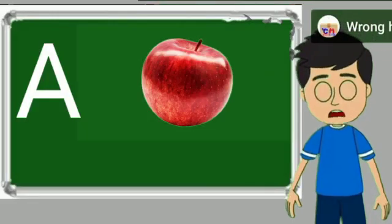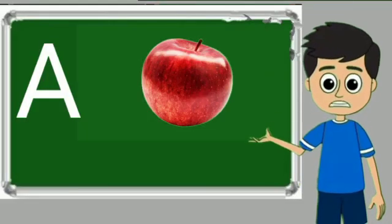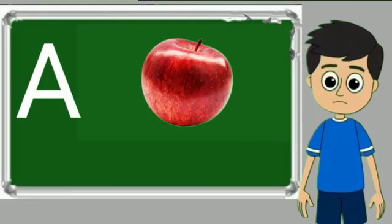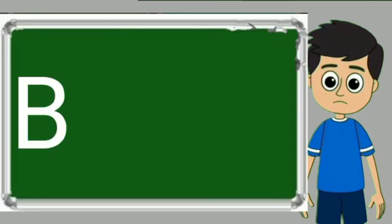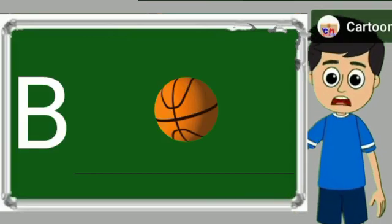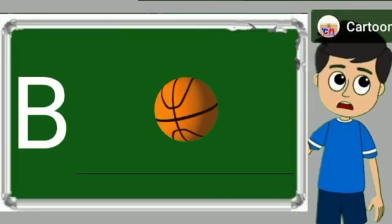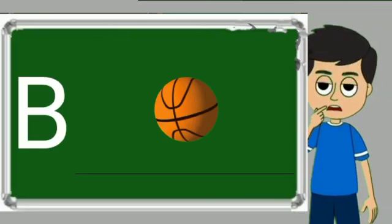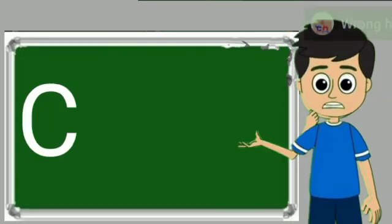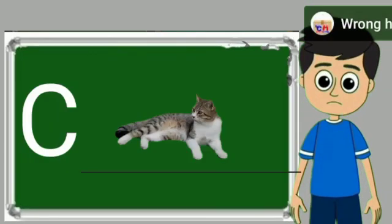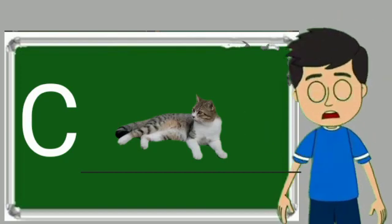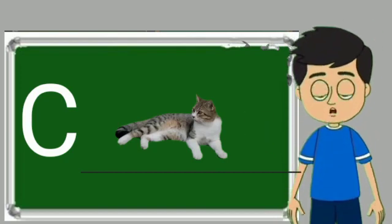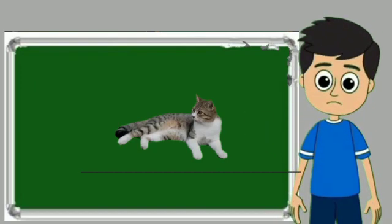A for apple. Apple means save. B for ball. Ball means gain. C for cat. Cat means billy.